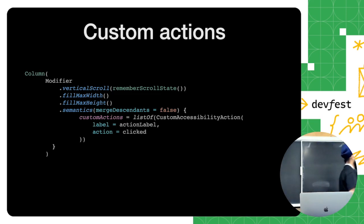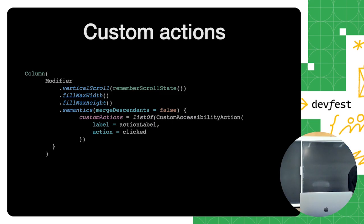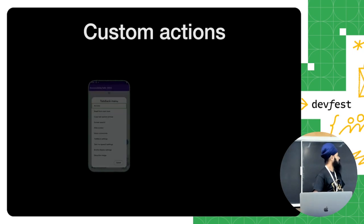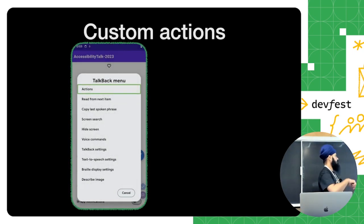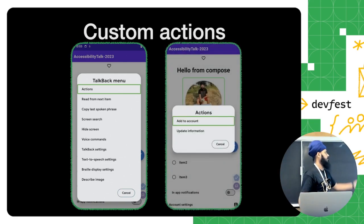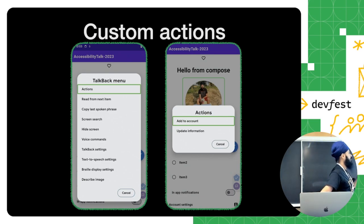The next one is custom actions in Compose. If there are actions that cannot be handled by TalkBack or screen reader — for example swipe actions — you can provide those via custom actions using semantics. It takes a list of custom actions; here I'm providing a single one with a label and the action to perform when selected. TalkBack will explain how to open the menu, show the actions option, and display the available actions — for example 'add to account' or 'update information.'